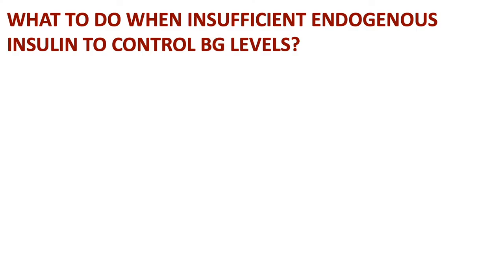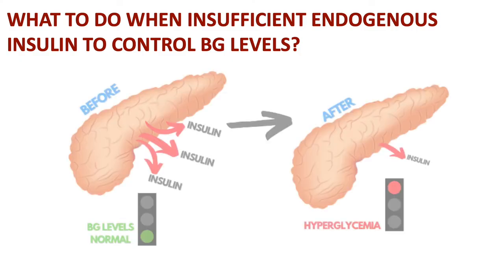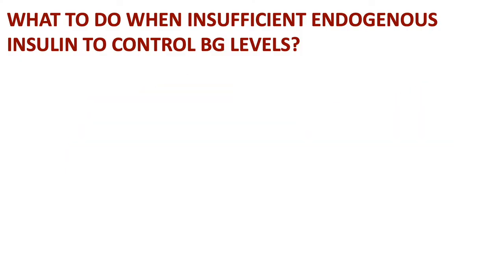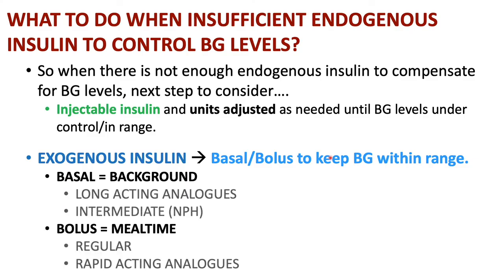Blood glucose levels will only be controlled up to a certain point in the honeymoon period. Eventually there will not be sufficient endogenous insulin secreted by the pancreatic beta cells to compensate, and in this situation the next step is to consider injectable — or exogenous — insulin. Units would be adjusted as needed using a basal-bolus regimen, with basal being long-acting or intermediate-acting insulin and bolus being regular or rapid-acting mealtime insulin.